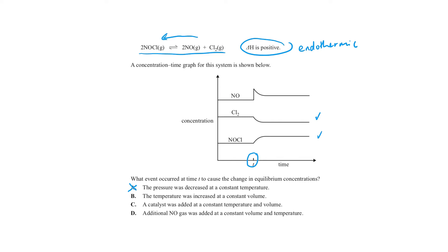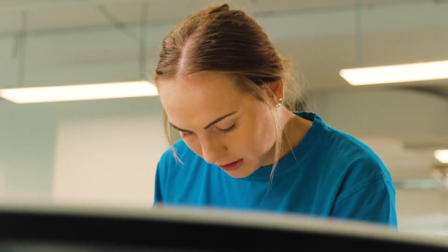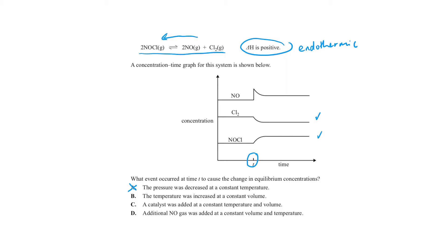B says that the temperature was increased at a constant volume. Now, because our reaction was endothermic, increasing the temperature will favour the forward reaction. Therefore, our chlorine should slowly increase, which has not happened. So B is incorrect.